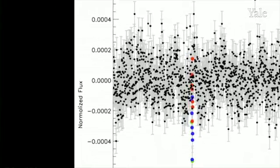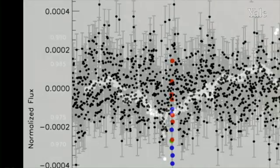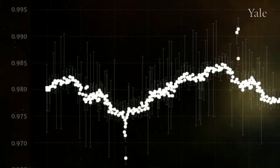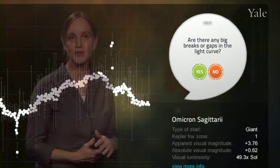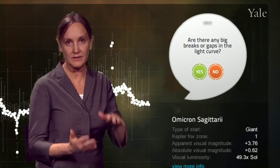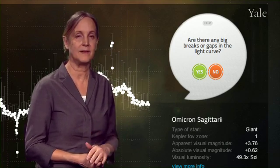With Planet Hunters, citizen scientists will be able to evaluate one of these light curves in a matter of seconds. We'll ask you to do three things. The first step is check to see if there's an offset in the data, a sort of glitch, and let us know about that so we can go in and fix it.